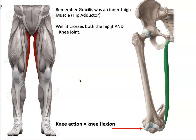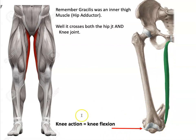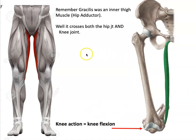Gracilis is also a knee flexor. You learned about gracilis when we did our hip adductors — all those inner thigh muscles. Gracilis crosses two joints: hip and knee. When it contracts, it pulls up because it's inserted on the tibia, and it bends the knee — knee flexion.